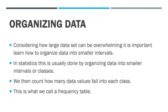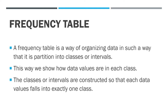This is what we call a frequency table. A frequency table is a way of organizing data partitioned into classes or intervals — called 'bins' in Excel. Once data falls into that bin or range of numbers, we classify it as part of that class and count it as one of the frequencies for our frequency table. This is our way to show how data values are distributed across each class. The classes or intervals are constructed so that each data value falls into exactly one class.